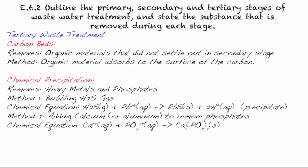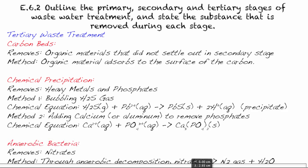Our last process that we're going to talk about is using bacteria, but different bacteria than in the second stage. So we're going to be using anaerobic bacteria to remove nitrates. So the method to do this is through anaerobic decomposition. And in this case, what happens is the nitrates will be converted into nitrogen gas, which is what makes up most of our atmosphere and water.